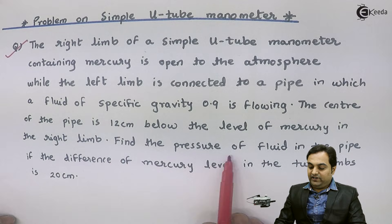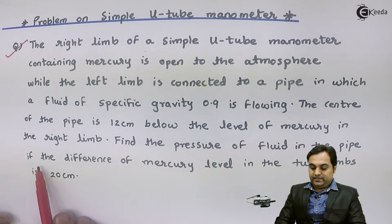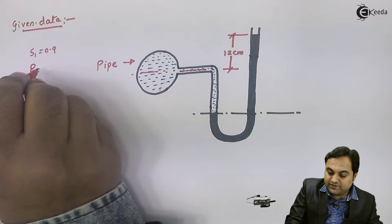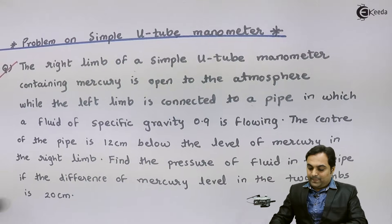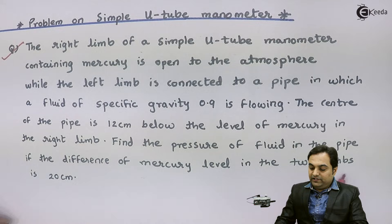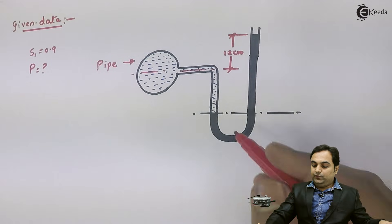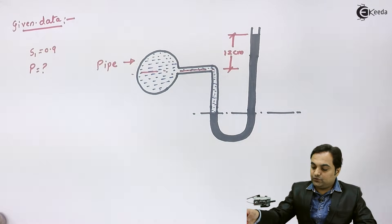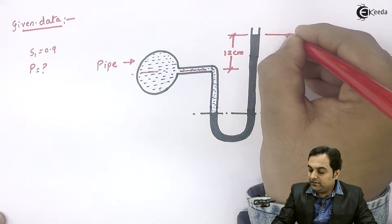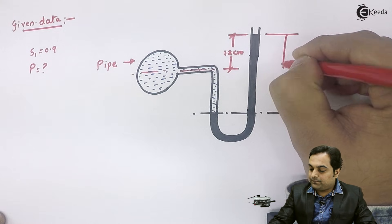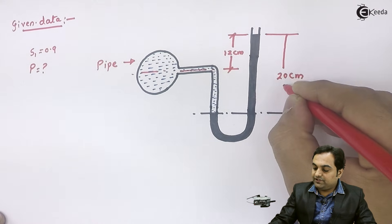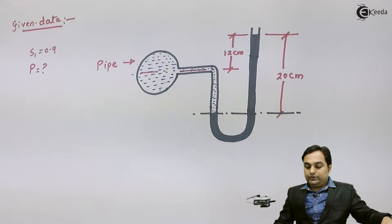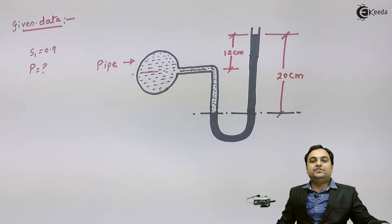We have to find the pressure of the fluid in the pipe, which I will denote by letter P — that is the pressure inside the pipeline. The difference of mercury level in the two limbs is 20 centimeters, so we have mercury in the left limb as well as the right limb, and I can mark the level difference as 20 centimeters.